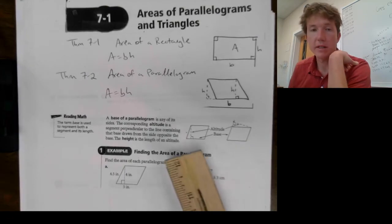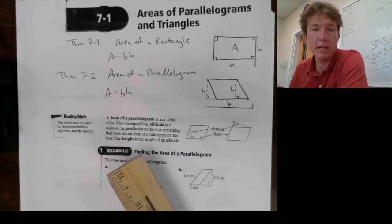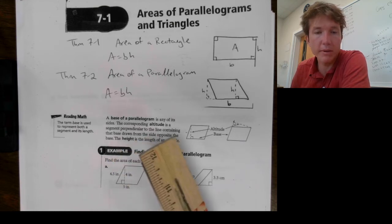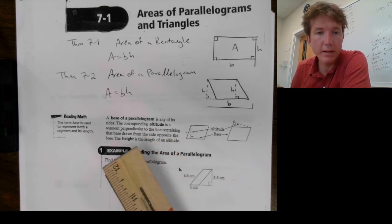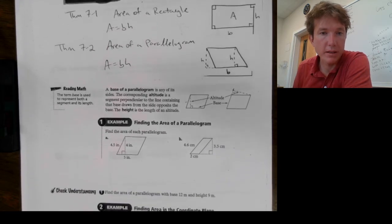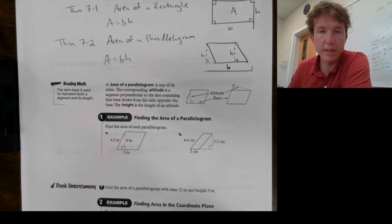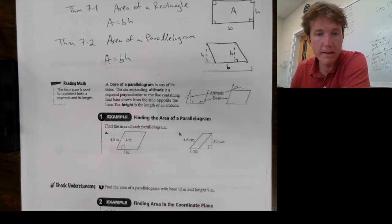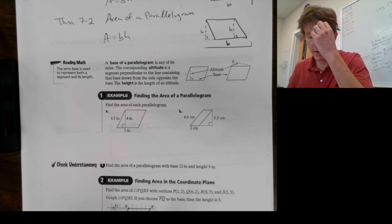So that's what this says right here. Is that the base of a parallelogram is any of its sides. The corresponding altitude or the height is a segment perpendicular to the line containing that base. The height is the length of an altitude. So, these are altitudes. That's just from the top to the bottom. Alright.